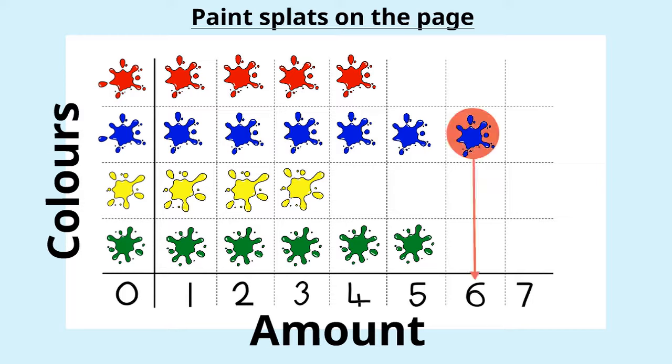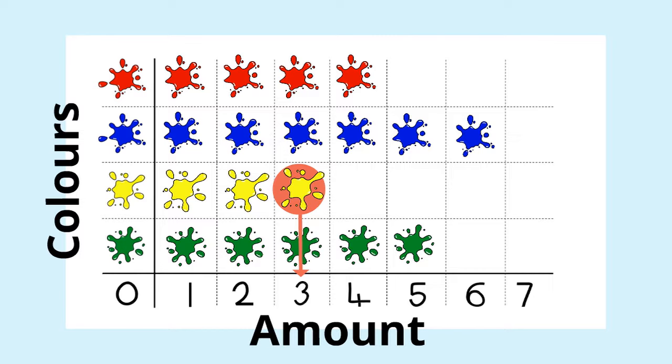Well, you should have got blue has got the most splats with six altogether. Let's try another one. Which color had the least amount of splats? Pause the video and write down your answer. Well, the answer is yellow with three splats.